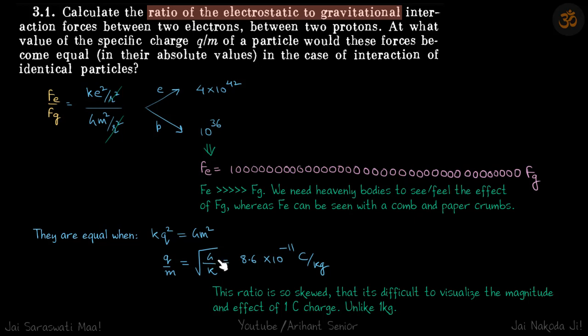Putting in the universal constants, you get q/m as 8.6 × 10⁻¹¹ coulombs per kilogram.